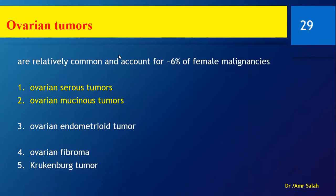To summarize the tumor types: serous has soft tissue nodules; mucinous has a multiloculated appearance; endometrioid looks like an endometrioma or chocolate cyst; fibroma looks like a fibroid.